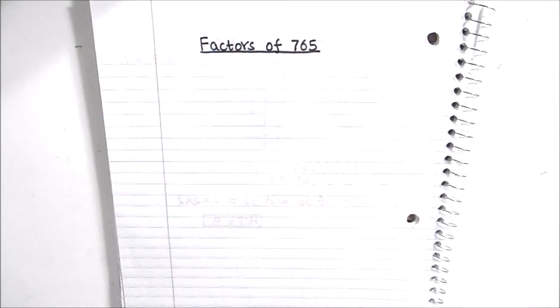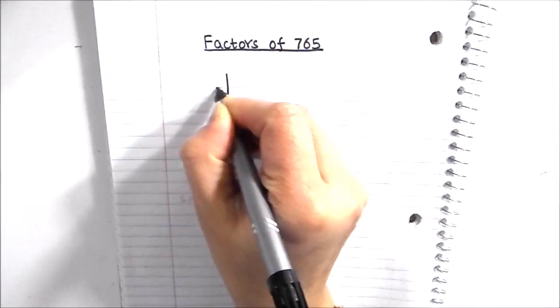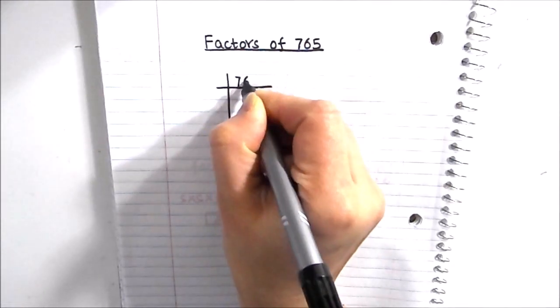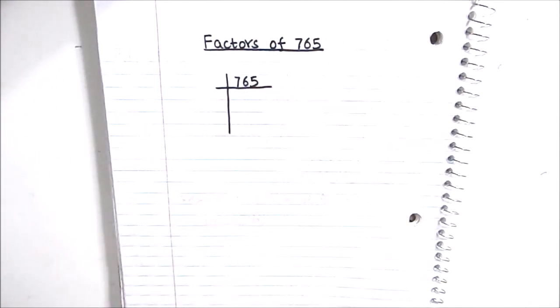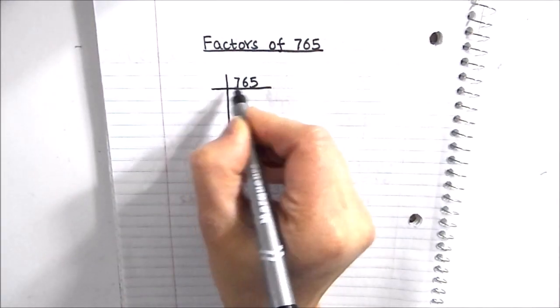Hello students, let us find the factors of 765 using the prime factorization method. So we'll write 765 like this and we'll divide this number by prime numbers. As this is an odd number, it is not divisible by 2.